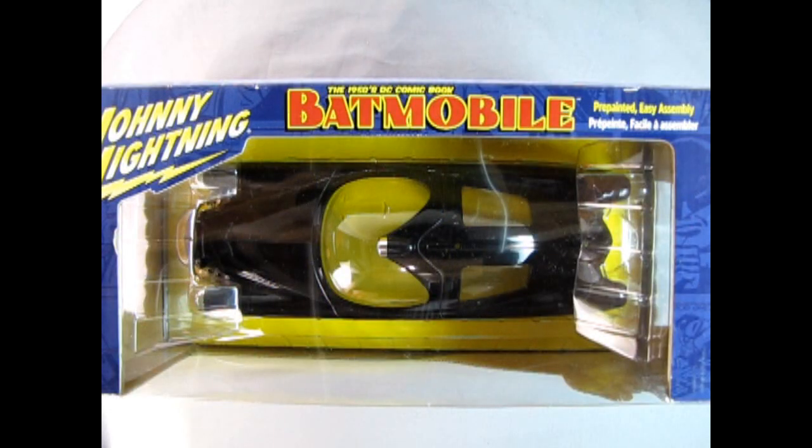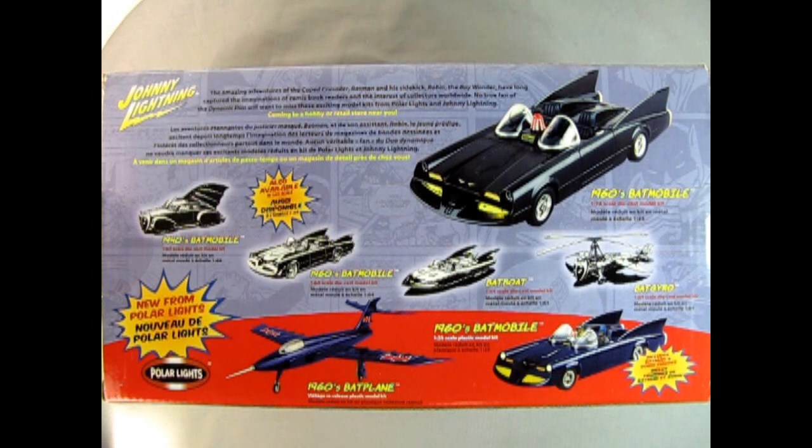This is a pre-painted easy assembly model kit for ages 10 and up at skill level 2. The back of the box also shows us many amazing Batmobile model kits by Johnny Lightning and Polar Lights like the 1940s Batmobile, the 1:64 scale 60s Batmobile, the 1:24 scale 60s Batmobile, the Batboat and the Batgyro, and from Polar Lights the 60s Batplane and the 60s Batmobile.